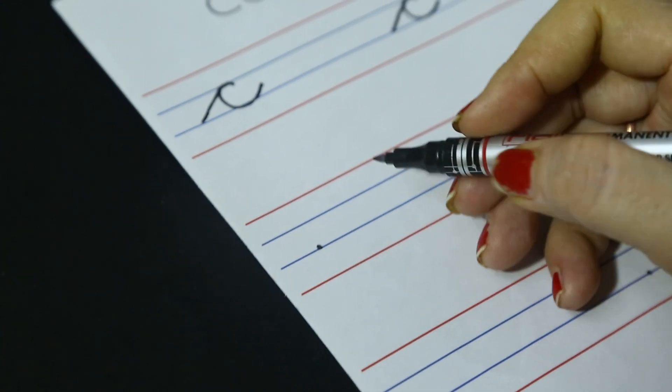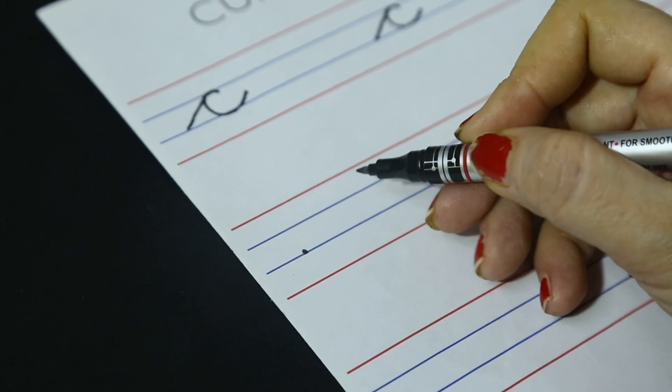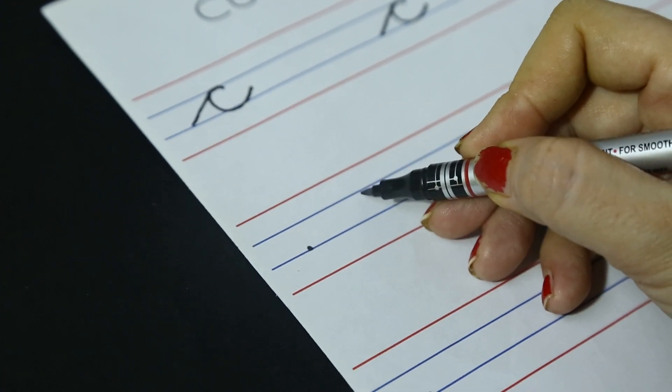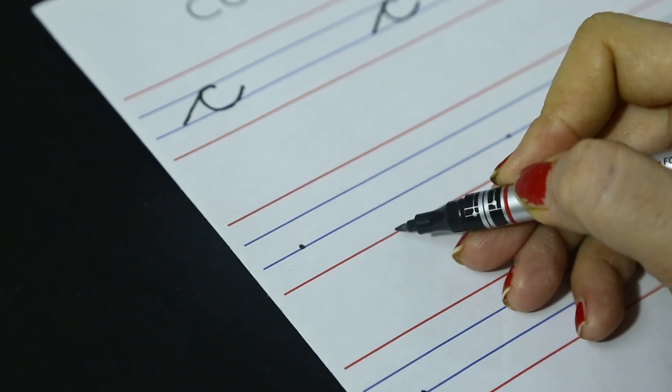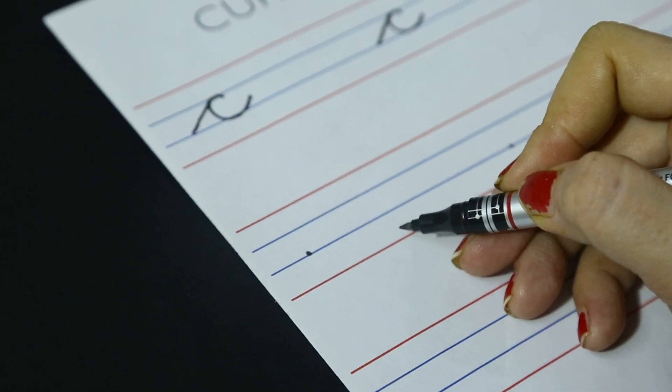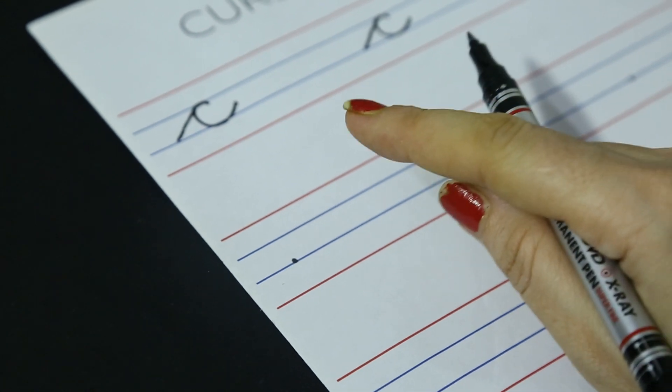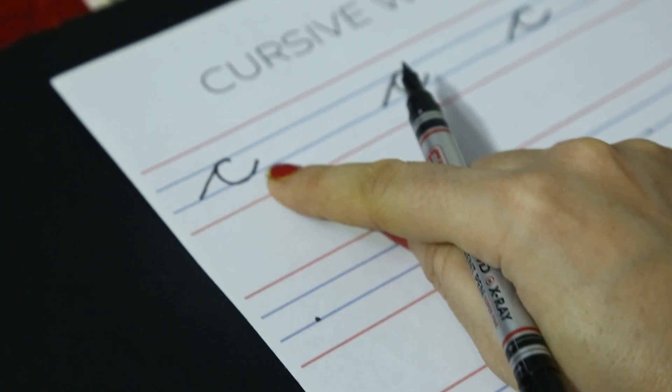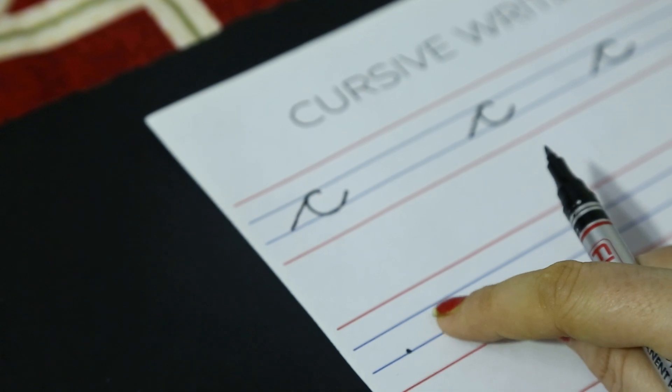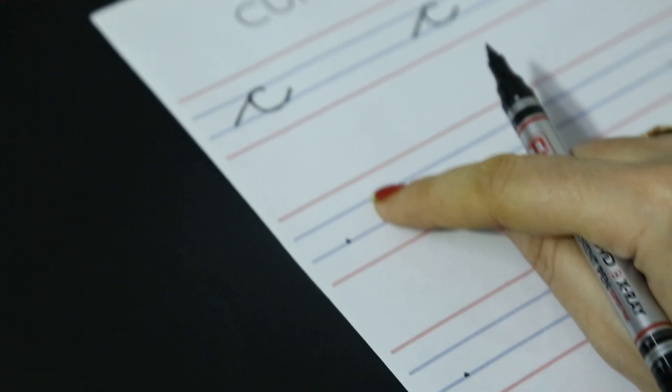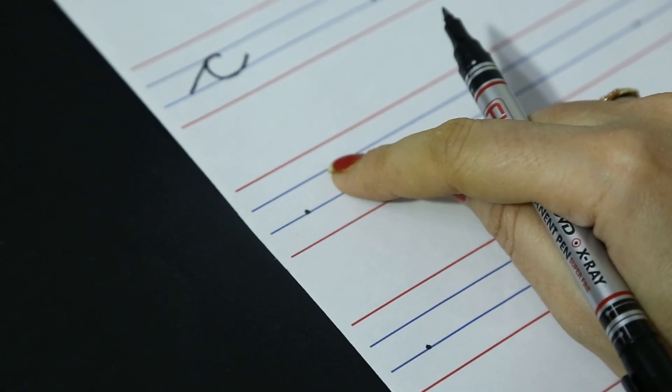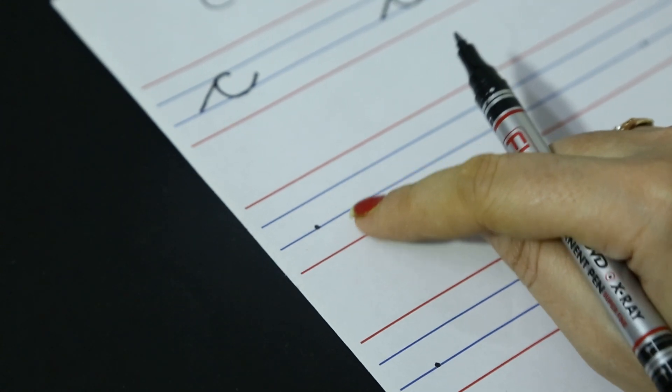In English notebook there are four lines: red line, blue line, blue line, red line. You have to make cursive letter C in the middle lines, in the middle blue lines. How? Let's see.